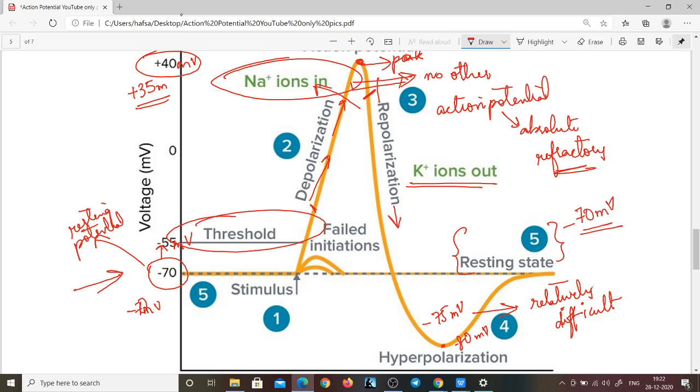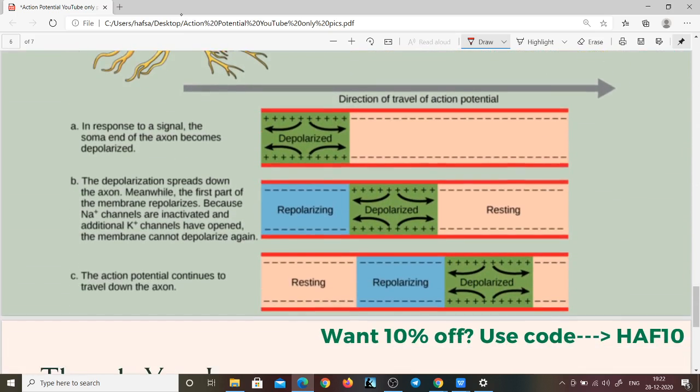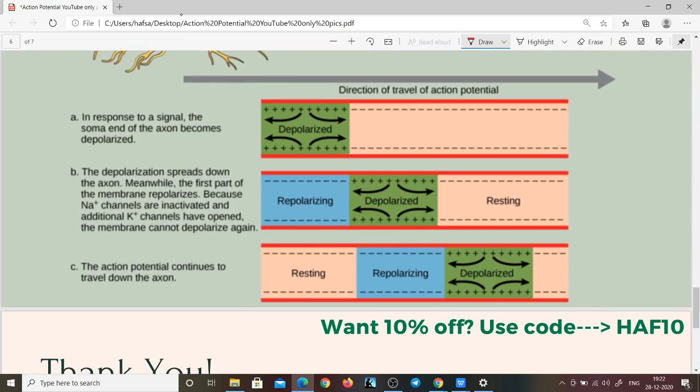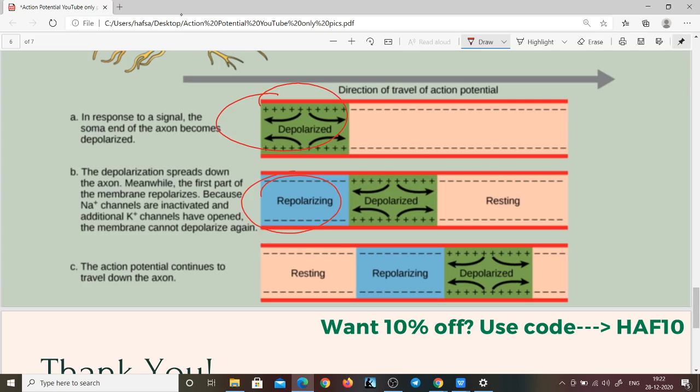Now this is a better view for you to see that an action potential basically takes place at every node of Ranvier. And then you can clearly see that some parts depolarize, some repolarize, and you can see how little bits of your axon basically have different action potentials. When one finishes, another one begins, and then another one and so on.